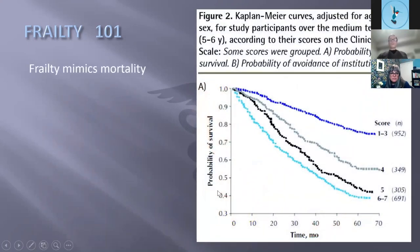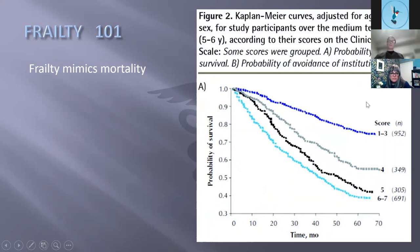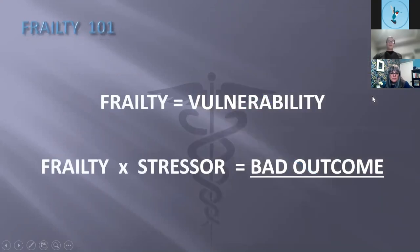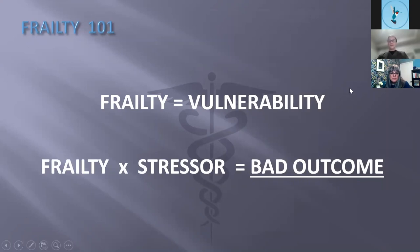If you're frail, your probability of survival drops dramatically over time compared to someone who is not frail. Frailty is a strong indicator of how well you'll recover from whatever health issue comes about — whether looking at avoidance of institutional care or survival. For those who like math: frailty times a stressor equals a bad outcome most of the time. We're not widgets — it doesn't always end in a bad outcome, but it often does.